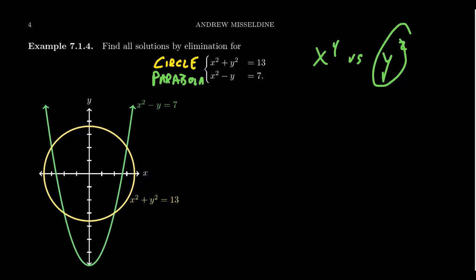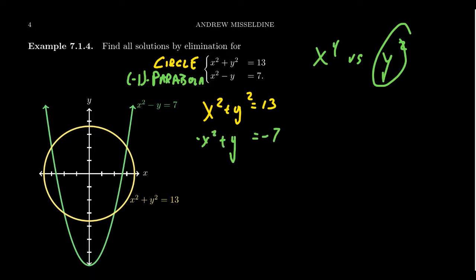So geometrically we anticipate anywhere from zero to four solutions. Let's find them algebraically using elimination. If we take the second equation and multiply it by -1, we get: first equation x² + y² = 13, combined with -x² + y = -7. Adding these two equations, the x² terms cancel out — which is what we wanted. We can't combine y² with y since they're not like terms, so we have y² + y.